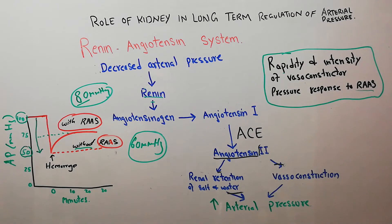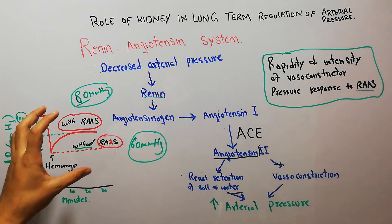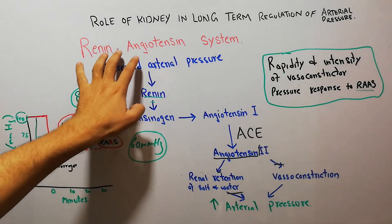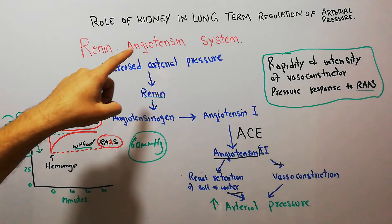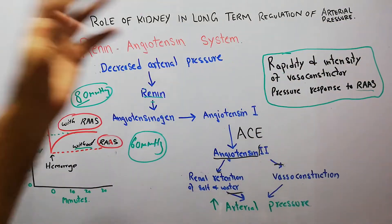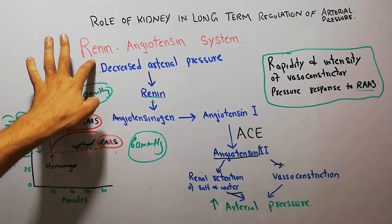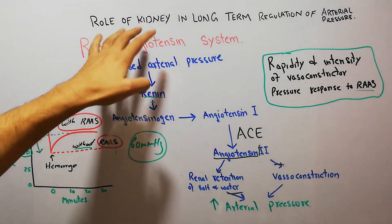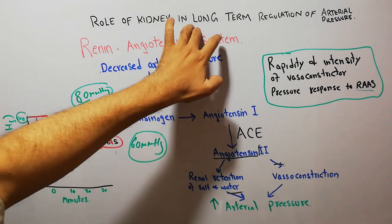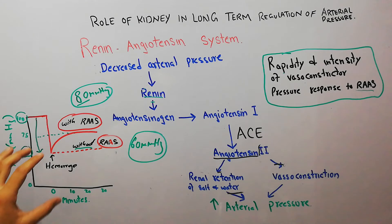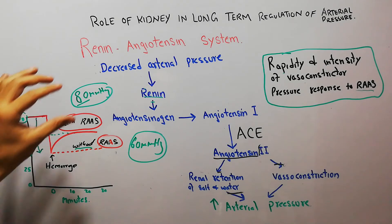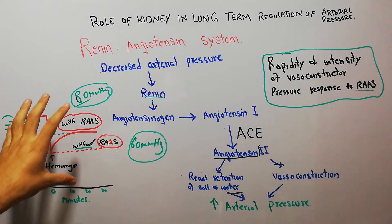This demonstrates the importance of the renin-angiotensin system in raising arterial pressure. Because renin is secreted by the kidneys, this also shows the role of the kidney in regulation of arterial pressure with the help of the renin-angiotensin system.